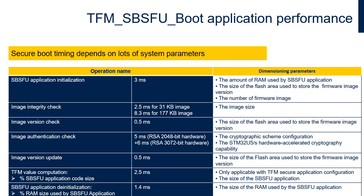The number of firmware images: two firmware images. The number of firmware slots: primary and secondary slots. The size of the firmware images: 31 KB and 177 KB. The size of the flash memory area used for the firmware image version storage: 8 KB. The SBSFU cryptography scheme configuration: RSA 2048, firmware encryption supported.